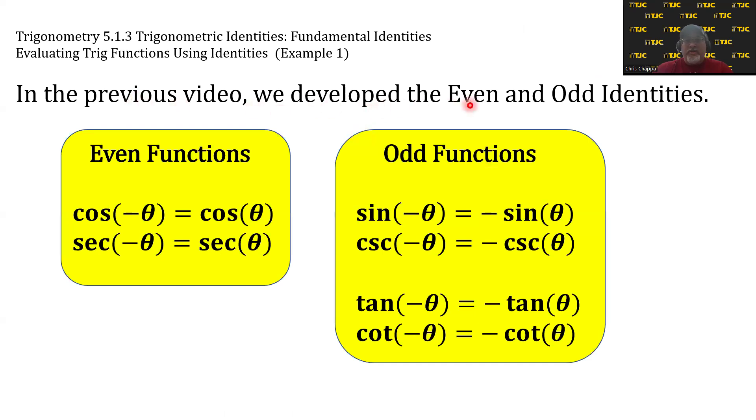In the previous video, we developed the even and odd identities. Specifically, the following are even functions: cosine of negative theta equals cosine of theta, and secant of negative theta equals secant of theta. Both of these say the same thing.